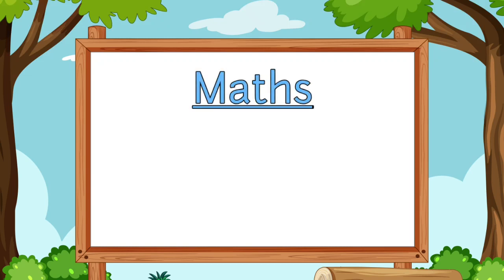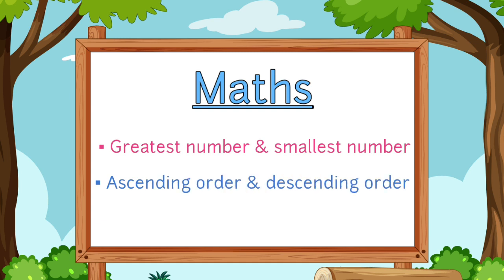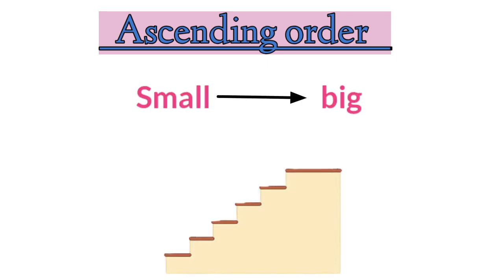Hello my dear children, welcome to math class. In today's math class we will learn greatest number and smallest number, along with ascending order and descending order from 1 to 50. Ascending order means arranging numbers from small to big, or when we move from downstairs to upstairs it is called ascending order.